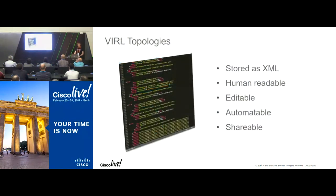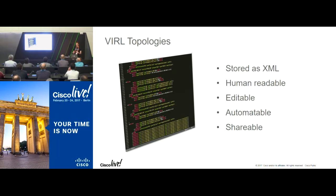The topologies themselves are stored as an XML file, making them human readable. The configuration is embedded there as well, so you can open a text editor and modify it directly, or pass it through something like Python to modify it. This makes it easy to use not just within the tools provided, but also through third-party tools or by importing from other topologies. Importantly, topologies are shareable — they can be pushed to GitHub or emailed to a colleague. Some network consultants have been preparing topologies themselves and emailing them to clients to share demonstrations and do proof-of-concept work.